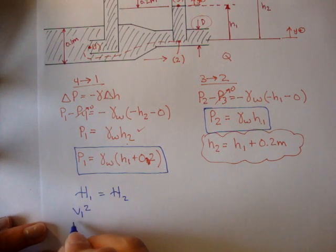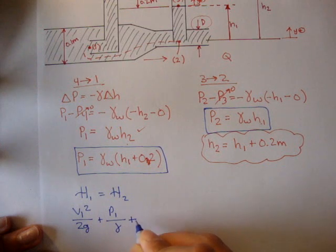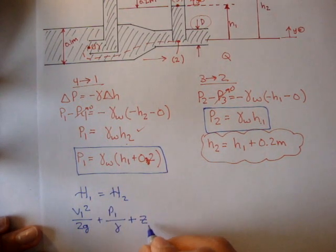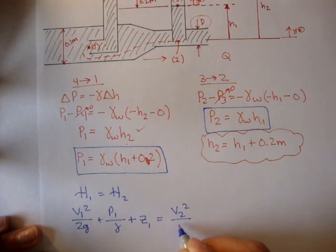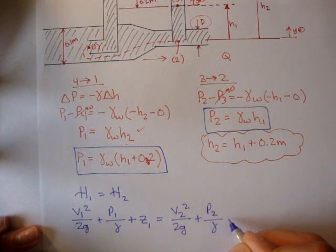So v1 squared over 2g plus pressure at one over gamma plus, we'll call the height z's because we already have h's. So z1 is equal to velocity of two over 2g plus pressure at two over gamma plus z2. Just the height.